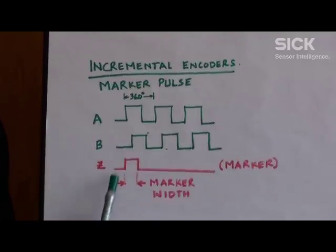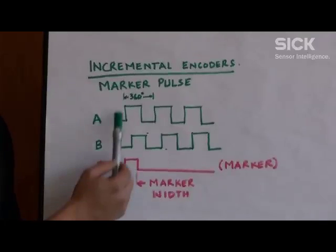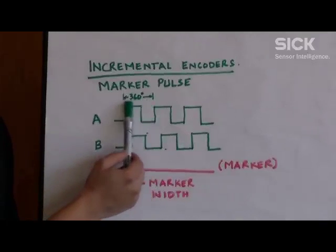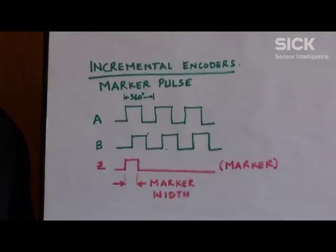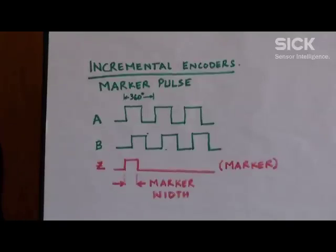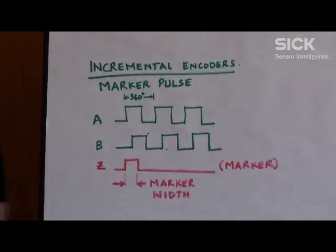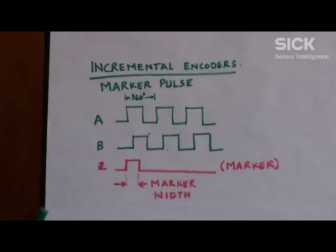You can get this pulse either within certain degrees of an electrical cycle or a certain number of degrees of the revolution of the shaft itself. We offer different marker widths, and the reason for these different marker widths is so that it's easy for the controller to pick up this pulse.